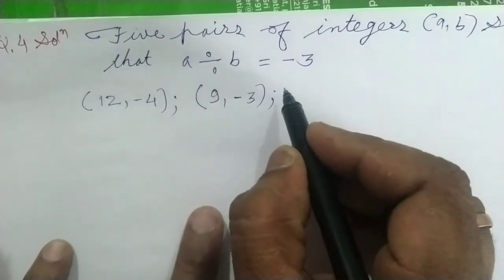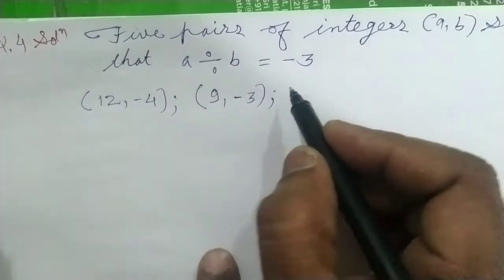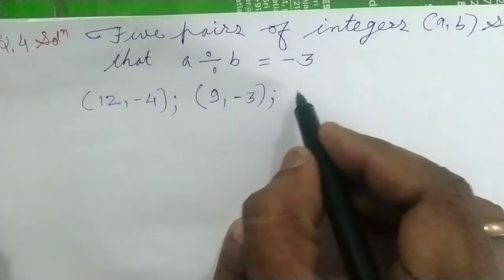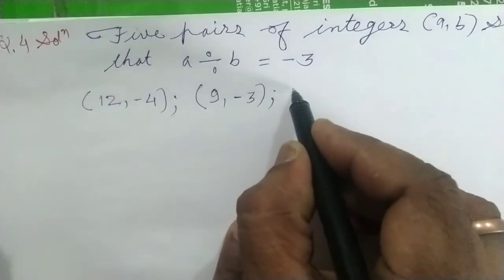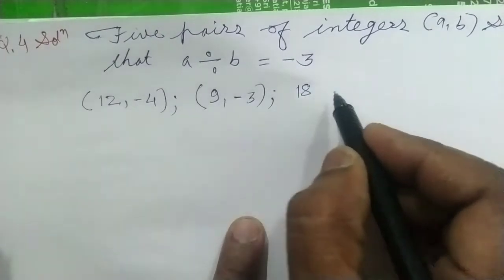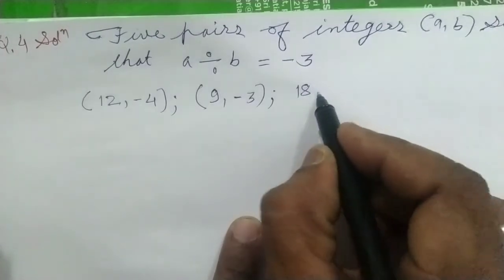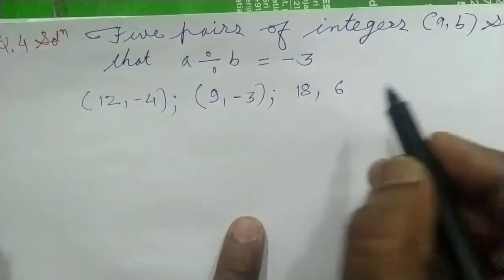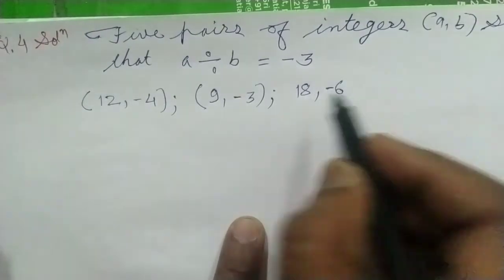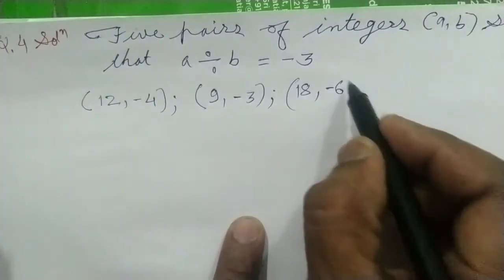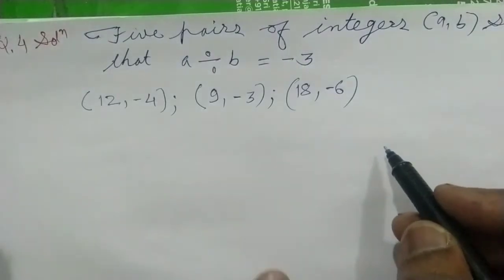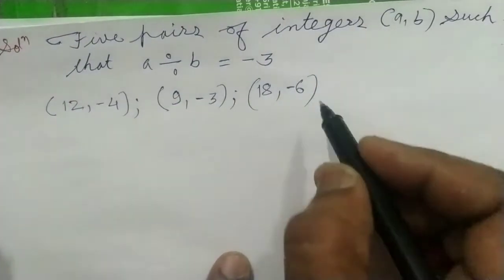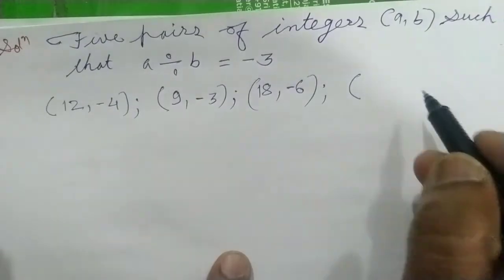आगे और pair भी लिख सकते हैं। जैसे 9 को double कर दिया तो 18 हो गया। 18 को किससे divide करों? Minus 6 से — तो minus 3 आ जाएगा। Sign को minus कर देंगे। इस प्रकार से यह तीसरा pair हो गया: A = 18, B = −6। अब 2 और pairs बताने हैं।